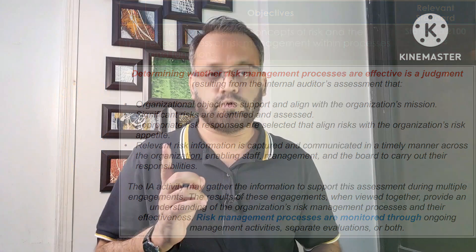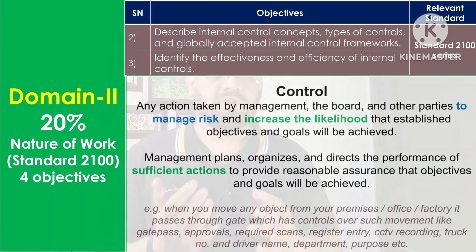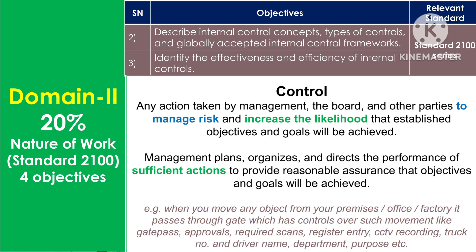Risk management processes are monitored through ongoing management activities, separate evaluations, or both. Moving forward in Domain 2, we'll cover objectives two and three, which are both relevant to controls. The second objective is to describe internal control concepts, types of controls, and globally accepted internal control frameworks. The third is to identify the effectiveness and efficiency of internal controls.